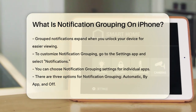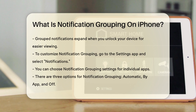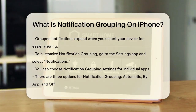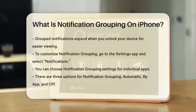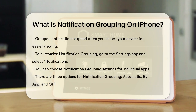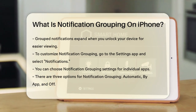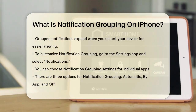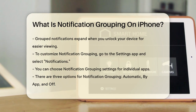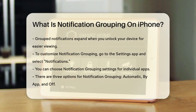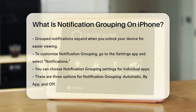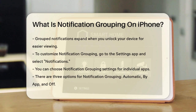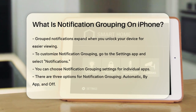To customize this feature, you need to go into your iPhone's settings. Open the Settings app, then navigate to the Notifications section. Here, you can select any app for which you want to configure notification grouping. Scroll down to the lock screen appearance section and tap on notification grouping.